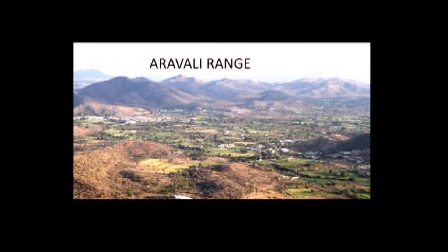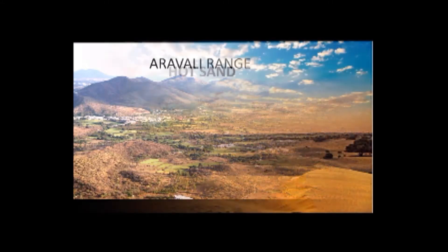In Rajasthan, the Aravalli Range is parallel to the monsoon winds, so it cannot help to produce rain, and due to lack of rain, this area became a desert.